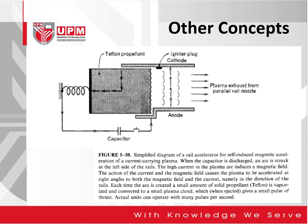Other concepts, some already in development or still in the conceptual stage, include a rail accelerator for self-induced magnetic acceleration of a current-carrying plasma. When the capacitor is discharged, an arc is struck at the left side of the rail. The high current in the plasma arc induces a magnetic field, and the action of the current and magnetic field causes the plasma to be accelerated at right angles to both the magnetic field and the current — namely, in the direction of the rails — using plasma exhausted from parallel rail nozzles.